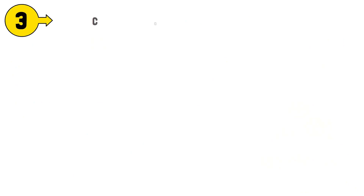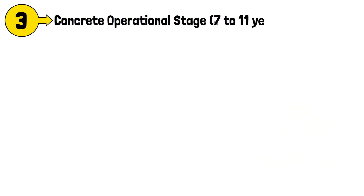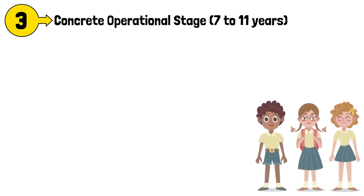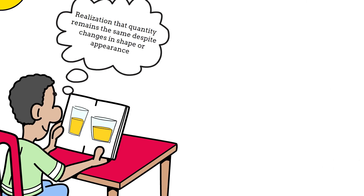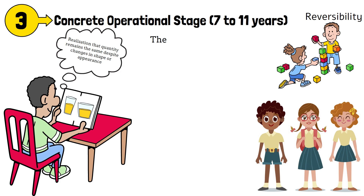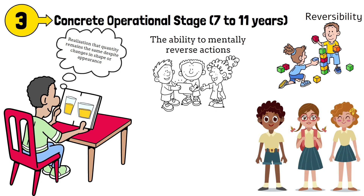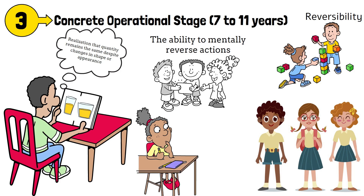Stage 3: the Concrete operational stage, from seven to eleven years. In this stage, children begin to think logically about concrete events. They gain a better understanding of the concept of conservation — the realization that quantity remains the same despite changes in shape or appearance. Children also develop reversibility, the ability to mentally reverse actions, and classification, the ability to organize objects into categories based on common features. Logical thinking becomes more evident, although it is still grounded in concrete experiences rather than abstract ideas.